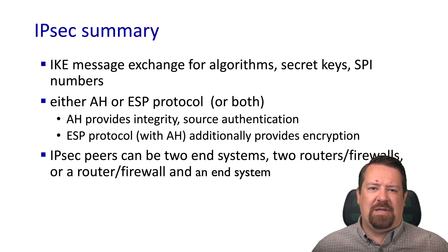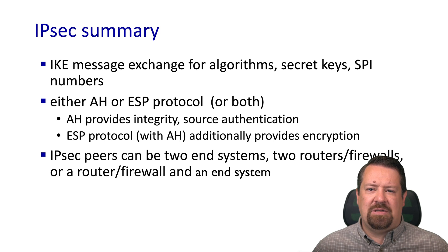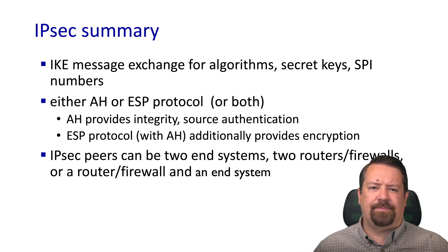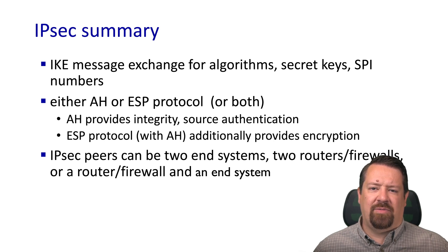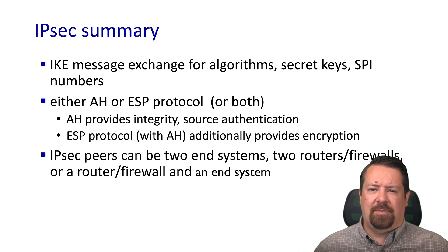Wrapping up, a few takeaways from our discussion of IPsec: it uses the IKE message exchange to negotiate what algorithms will be used and what the session keys will be — starting from either public keys or shared secrets to negotiate those session keys — and also negotiates the SPI numbers, which are identifiers for each association. It can operate in either authentication header mode or encapsulation mode, with encapsulation being much more common because it provides data confidentiality. IPsec peers can be any two systems that run IP — two routers, two end systems — but commonly one end host talking to a router or firewall. In the next video, we'll be looking at security in wireless and mobile networks, including both Wi-Fi and cellular networks.